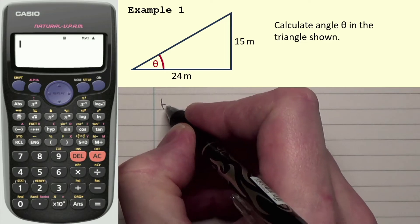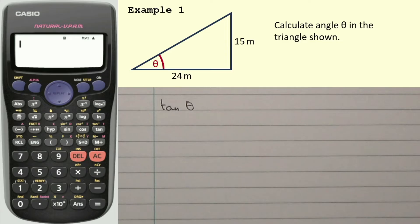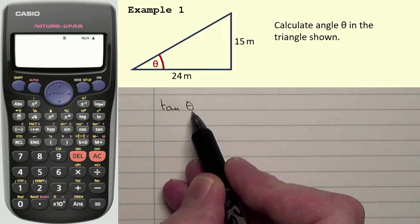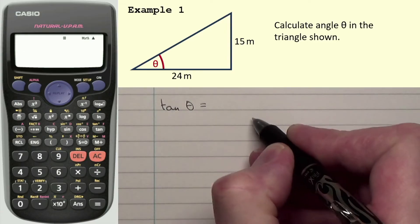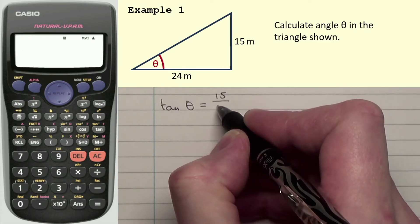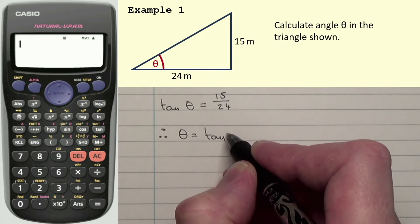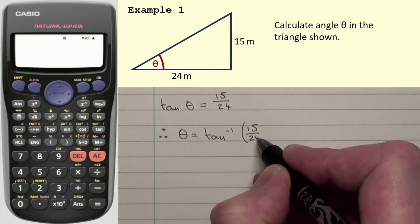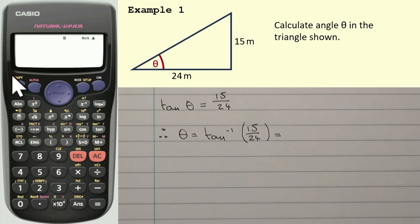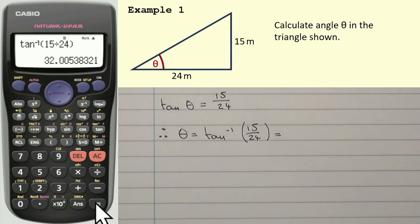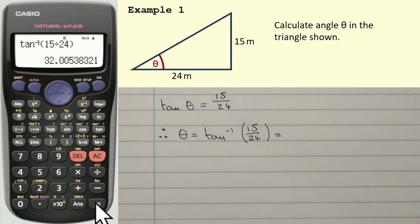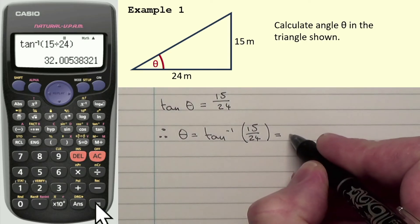So tan of the angle, now in maths a lot of the time the angle is written as an x, in physics a lot of the time it's written as this letter here, theta. So tan theta is equal to opposite divided by adjacent, would be 15 divided by 24. So that means, therefore, theta is equal to tan to the minus 1, 15 over 24. And if we work that out with a trusty calculator, we press shift and tan, 15 divided by 24, close a bracket. That gives us 32.005383215. Now because both of these sides are written to two significant figures, I'm going to write that angle to two significant figures. So I would say 32 degrees.